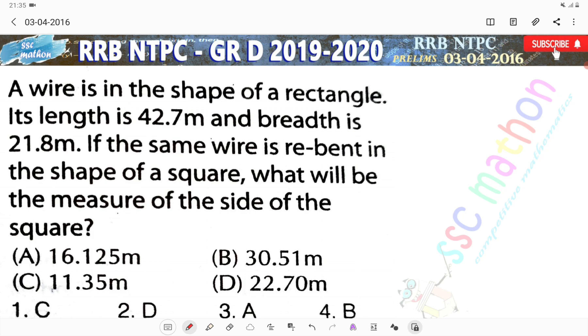Indivisible Institution problem 16: A wire is in the shape of a rectangle. Its length is 42.7m and the breadth is 21.8m. If the same wire is re-bent in the shape of a square, what will be the measure of the side of the square?